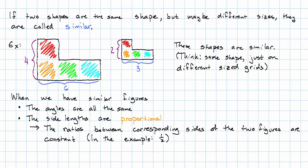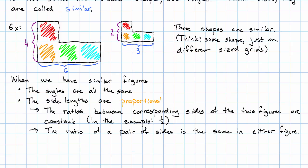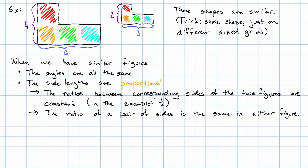But there's a more useful way for our purposes. It's easier to think of this as saying the ratio of a pair of sides is the same in either figure. In the big figure, the ratio between the two sides I marked was four to six. In the little figure, it was two to three. We can see those are equivalent fractions.